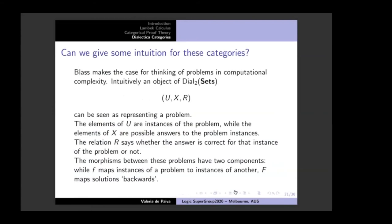You might want some intuition for these categories. BLAST makes a good case for thinking of them as problems in computational complexity: an object represents a problem, elements of U are instances of the problem, elements of X are possible answers, and the relation R says whether the answer is correct for that instance.